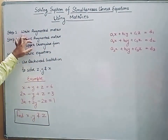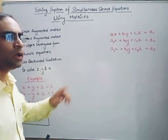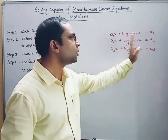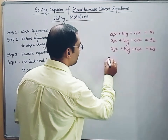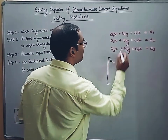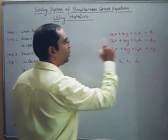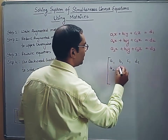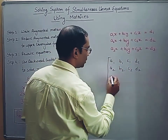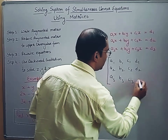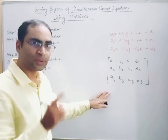Step 1: we will write the augmented matrix of the given system. We take the coefficients of all equations to form the augmented matrix. For the first equation we take a1, b1, c1, and d1. For the second equation a2, b2, c2, and d2. For the third equation a3, b3, c3, and d3. So we form this augmented matrix — that is step 1.